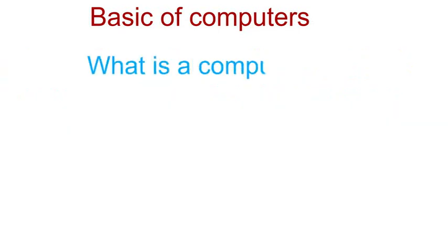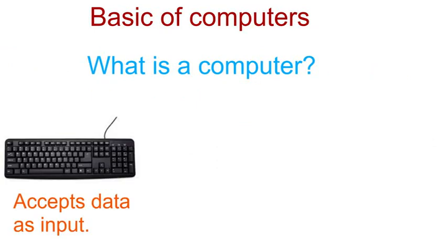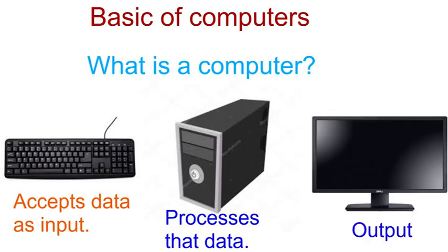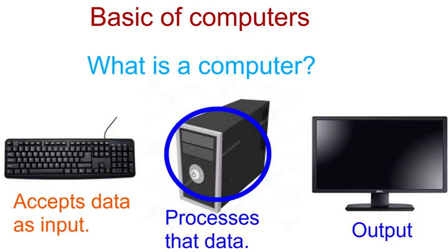What is computer? The proper definition of computer: It helps us to accept data as input, process that data, and outputs the processed data. Ye data ko input ke rup me swiqar karta hai, us data ko process karta hai.